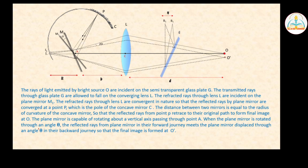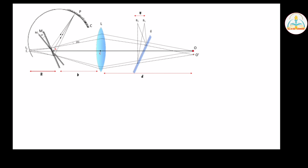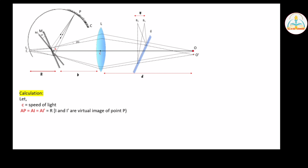So let's start our calculation with the following suppositions. Let C be the speed of light. AP is equal to AI, which is equal to AI-dash. Point A and B are defined, and I and I-dash are the respective image points. The angular axis passes through point B.